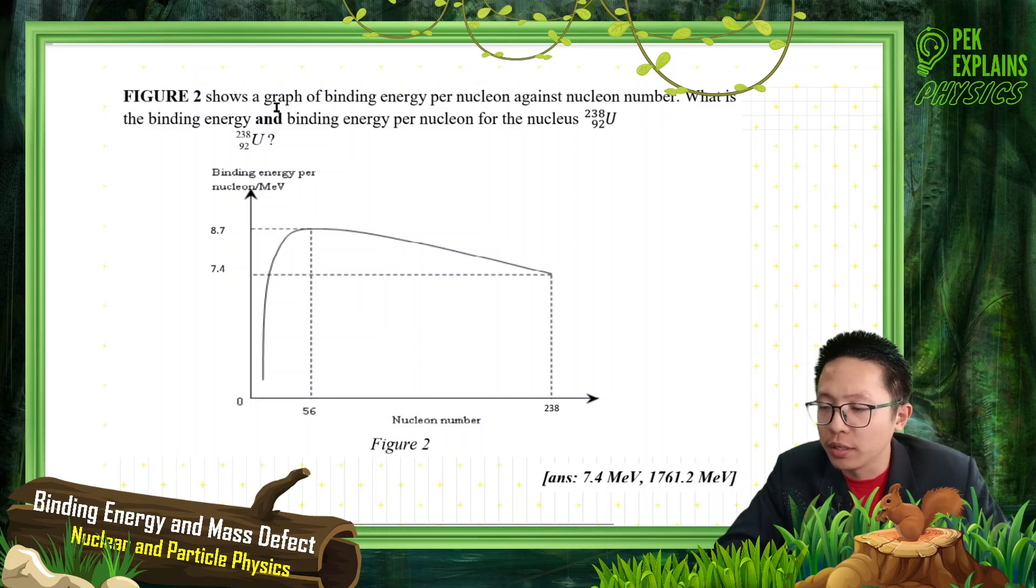Okay, figure 2 shows a graph of binding energy per nucleon against nucleon number. What is the binding energy and binding energy per nucleon for nucleus uranium-238?